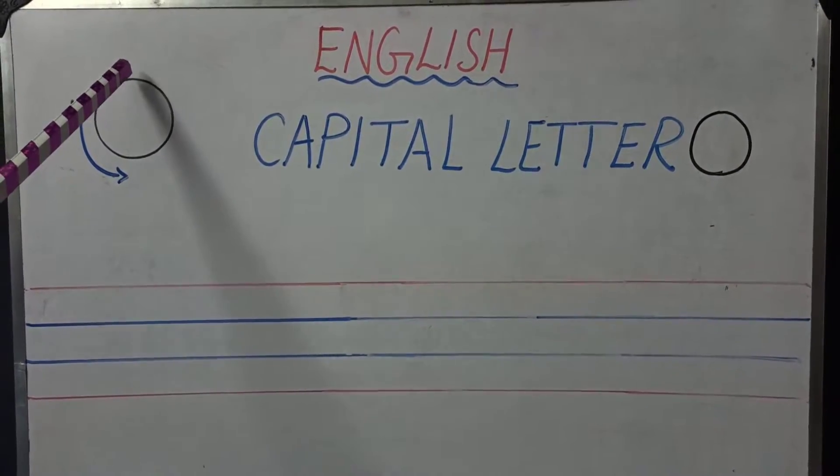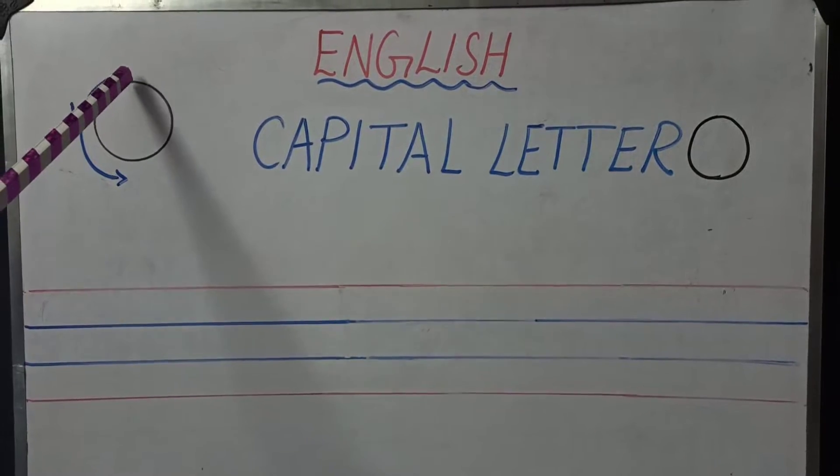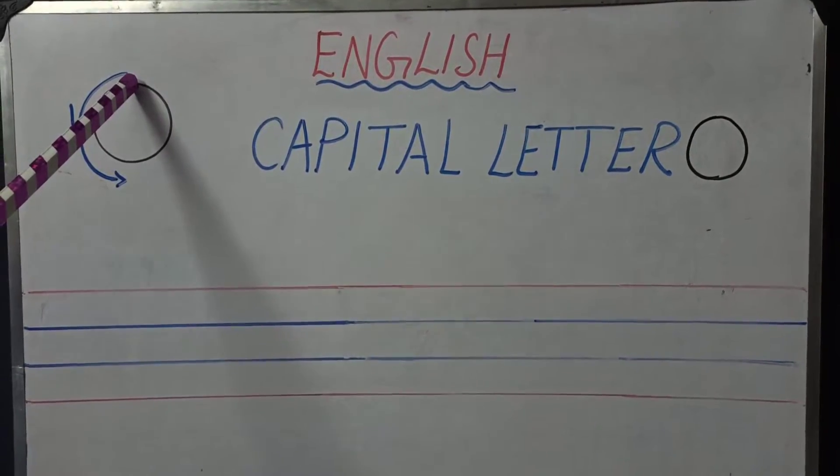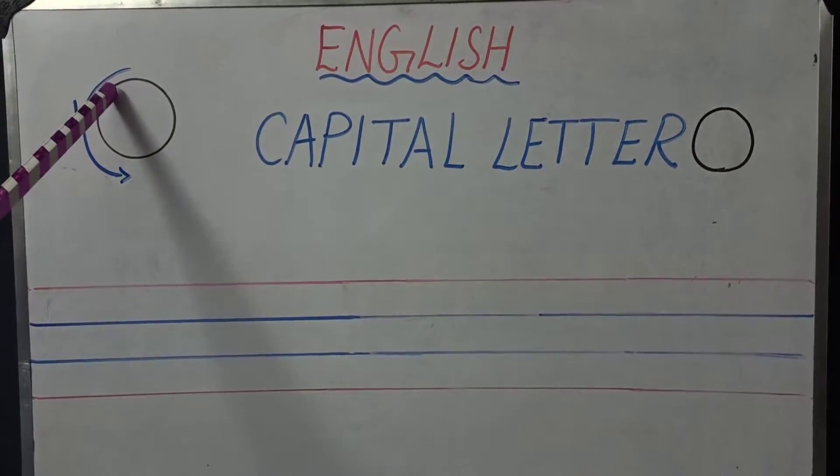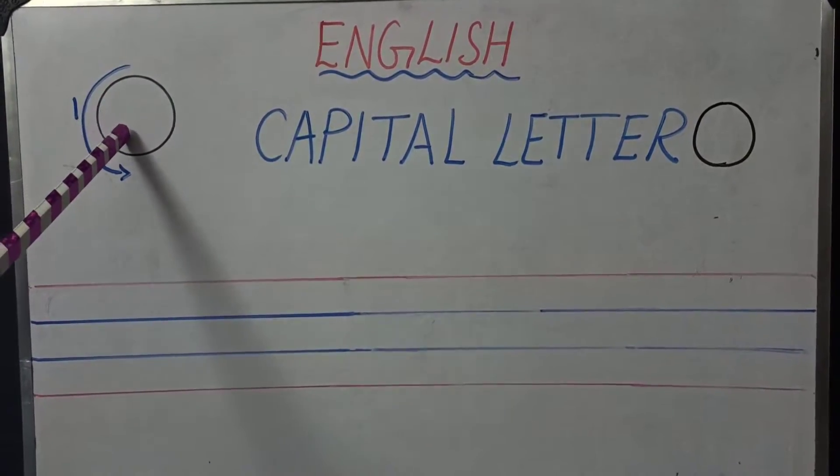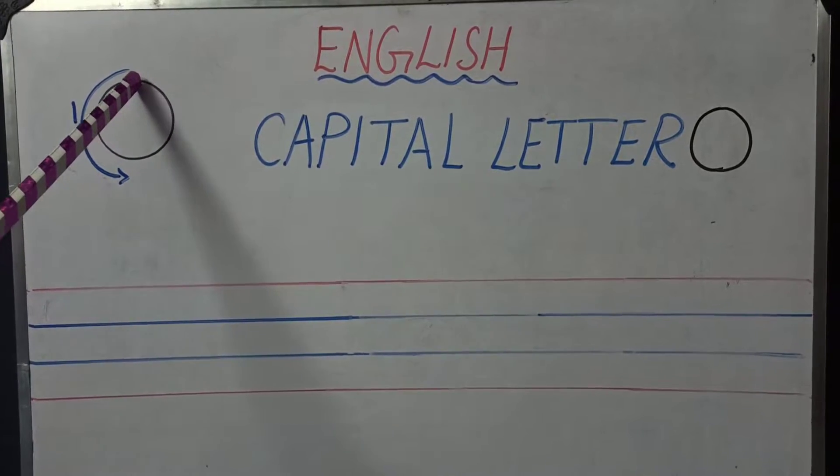Starting point is on top. You are going to start from up and you are going to turn towards your left, towards your left hand. You are going to make a curve and join the dot again.